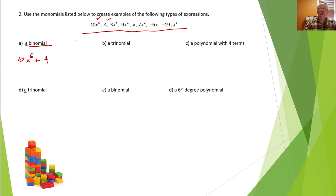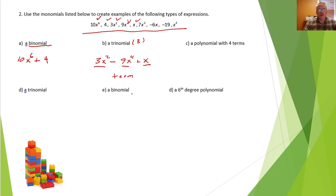To build a trinomial — that means 3 monomials — I'll use the next three: 3x squared, minus 9x to the fourth, plus x. Each of these monomials is called a term. So if we have a polynomial, binomial, or trinomial, the terms are the monomials that build it. If it has two terms it's a binomial, three terms it's a trinomial. If it has four or more we just call it a polynomial — poly means many. They're all polynomials, but if it has four terms there's no special name for it.